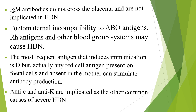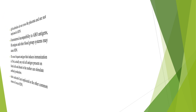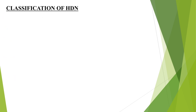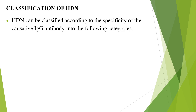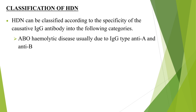Classification of HDN: HDN can be classified according to the specificity of the causative IgG antibody into the following categories. ABO hemolytic disease, usually due to IgG type anti-A and anti-B.